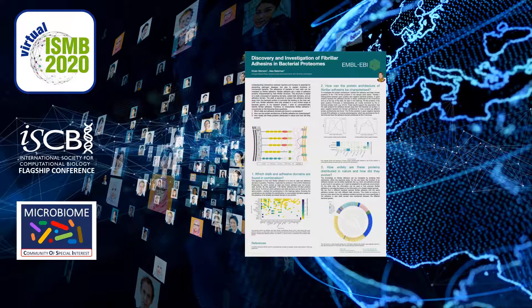But how are these domains actually arranged in the protein? I had a closer look at the protein architecture. In the density plots at the top right, I plotted the adhesive and stalk domain positions, with the density plot on the left for gram-positive bacteria and on the right for gram-negative bacteria. The domain positions for adhesive domains are in red and for stalk domains in blue. The x-axis represents the protein, where 0 stands for the N-terminus and 100 for the C-terminus.